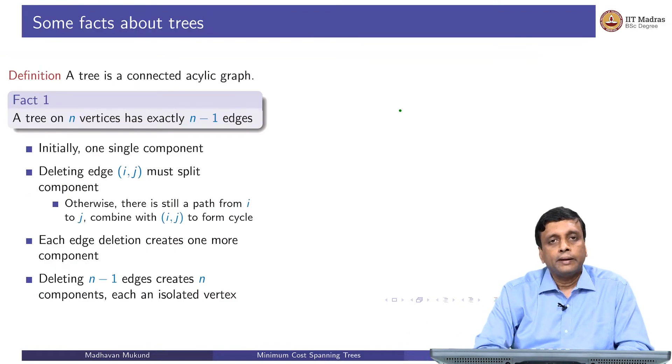It is useful to remind ourselves of some basic things about trees. First of all, a tree, as we said, is the smallest connected graph that you can draw. So if you have n vertices, then a tree on those n vertices will have exactly n minus 1 edges.